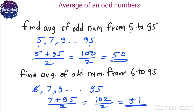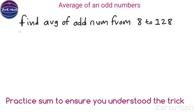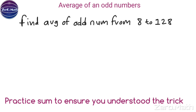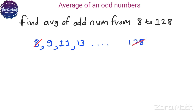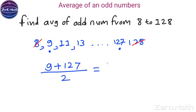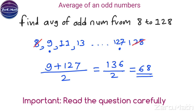So 51 is the average of odd numbers from 6 to 95. To ensure your concepts are clear, find the average of odd numbers from 8 to 128. Is 8 odd? No. The first odd number is 9. Is 128 odd? No. The odd number before 128 is 127. So first odd number is 9, last is 127. Sum: 9 + 127 = 136, divided by 2 equals 68. That is the average of odd numbers from 8 to 128. Please read the question carefully and apply the right formula.